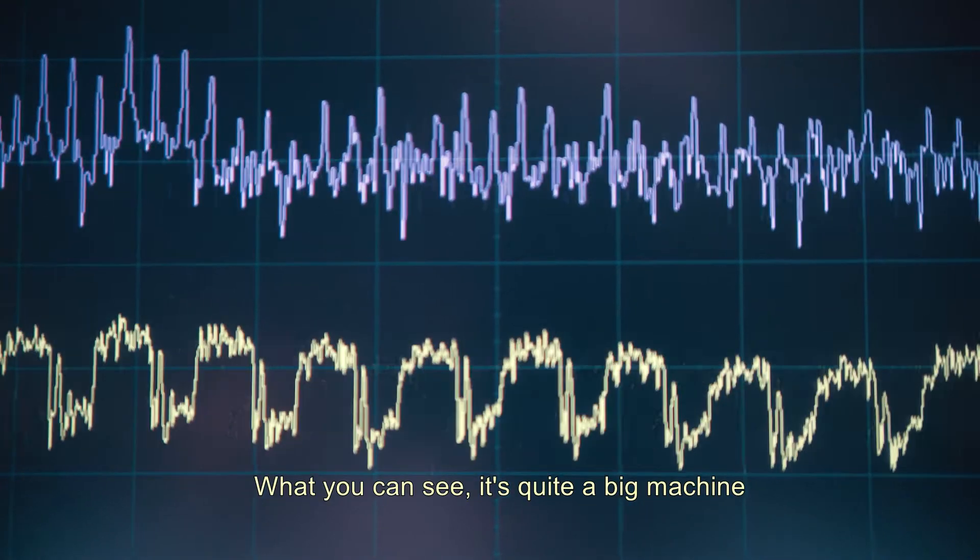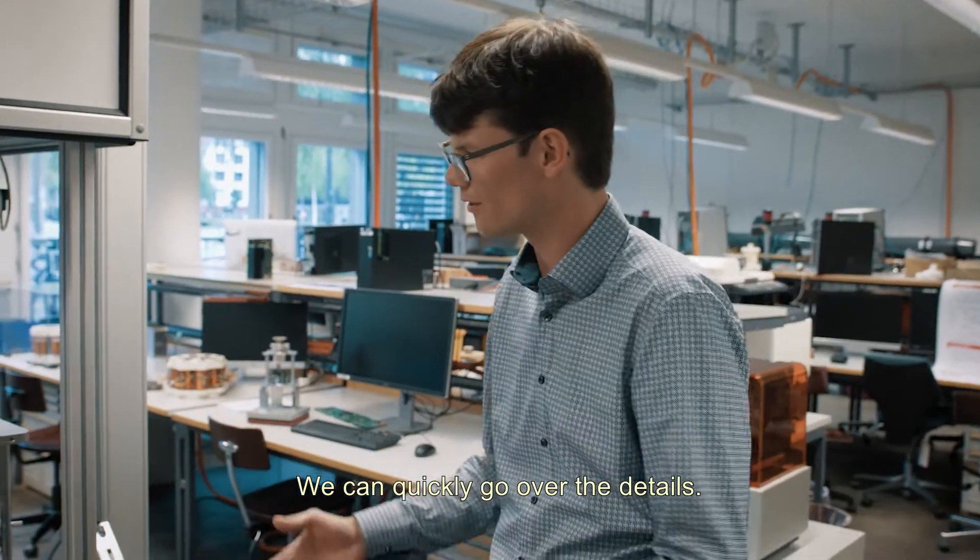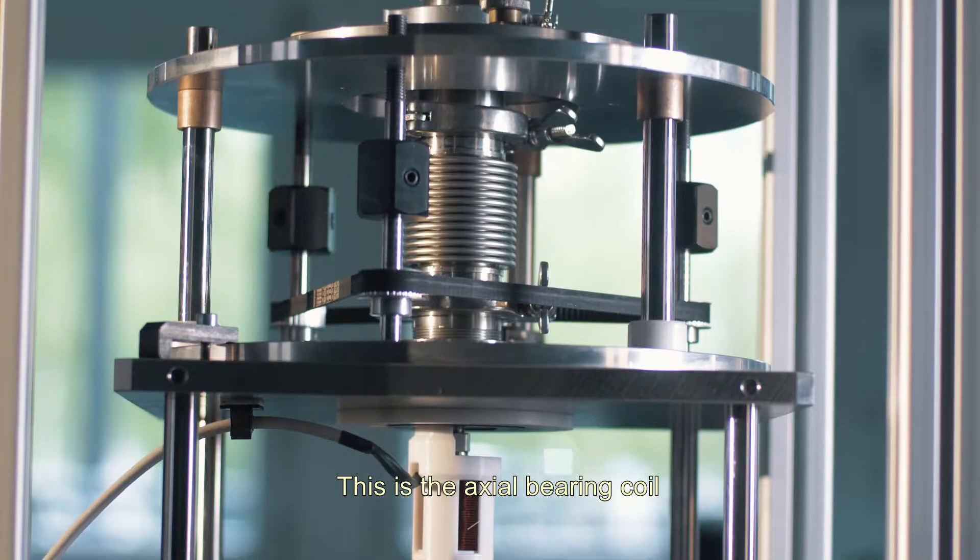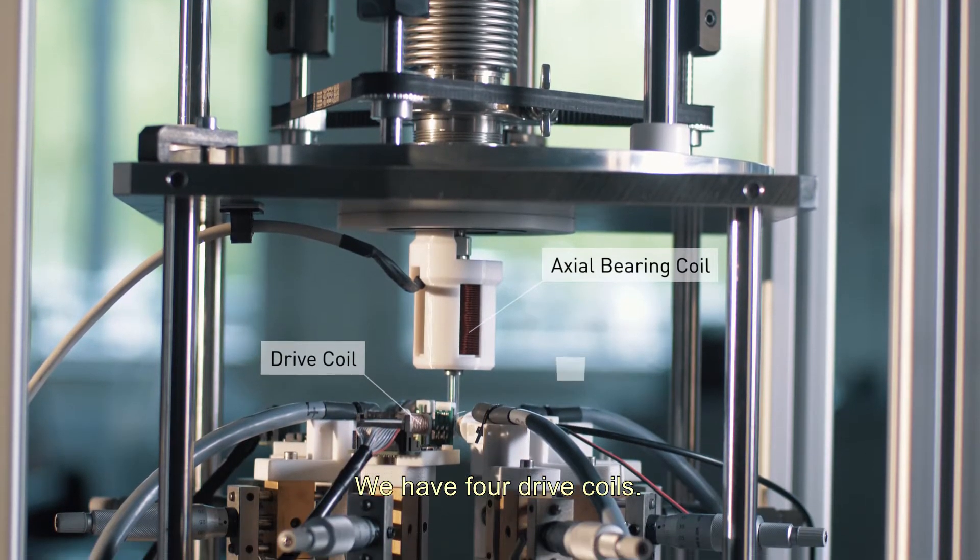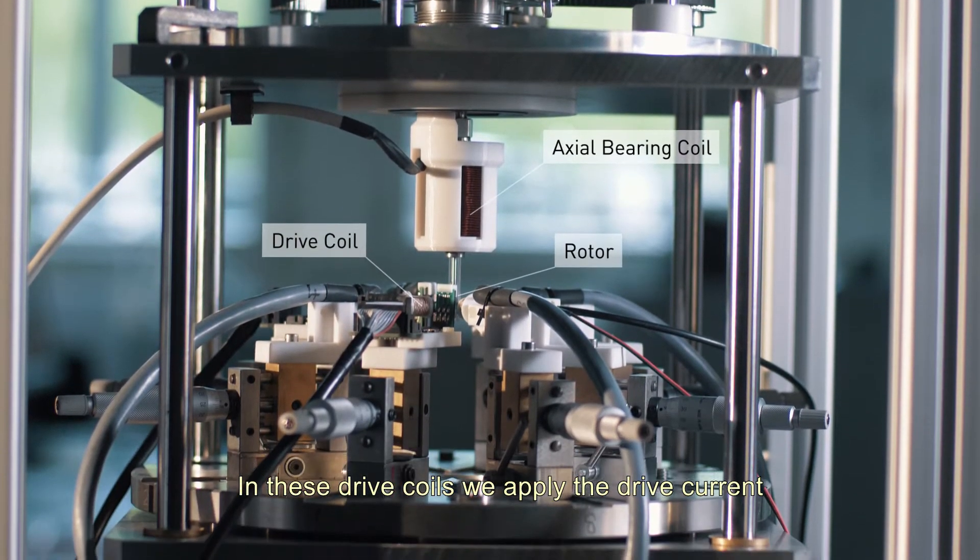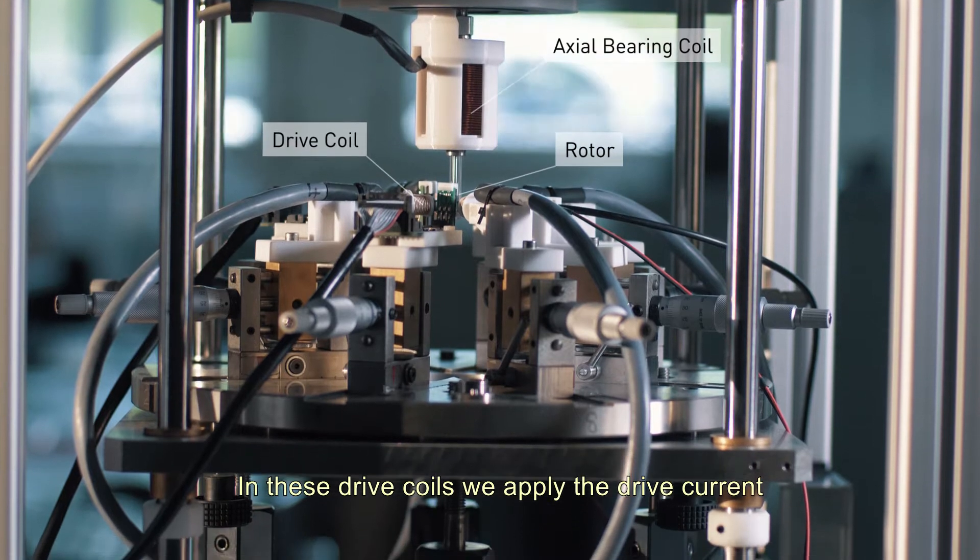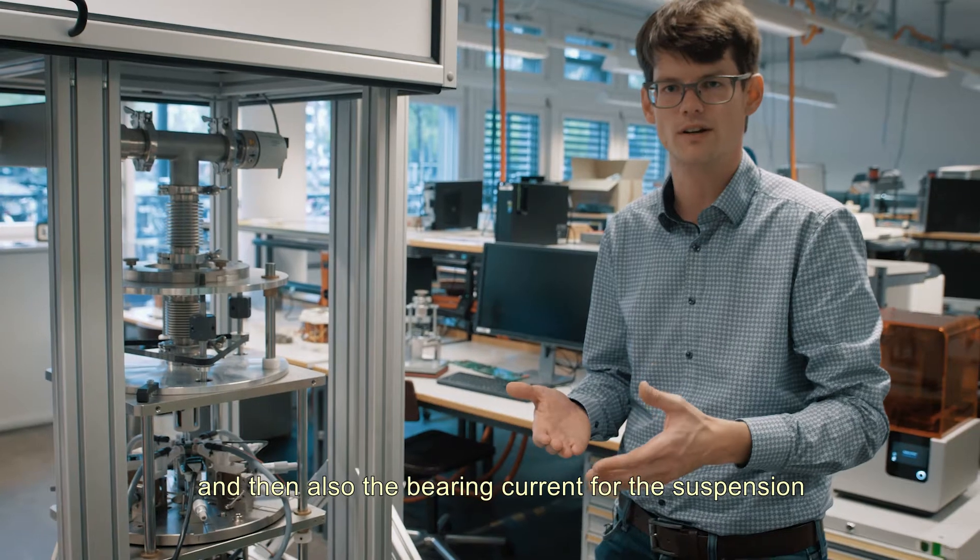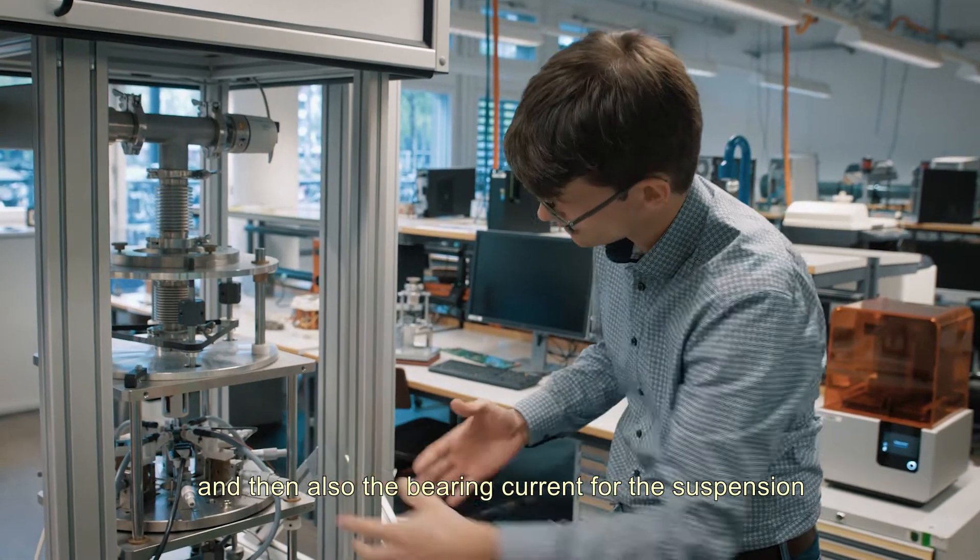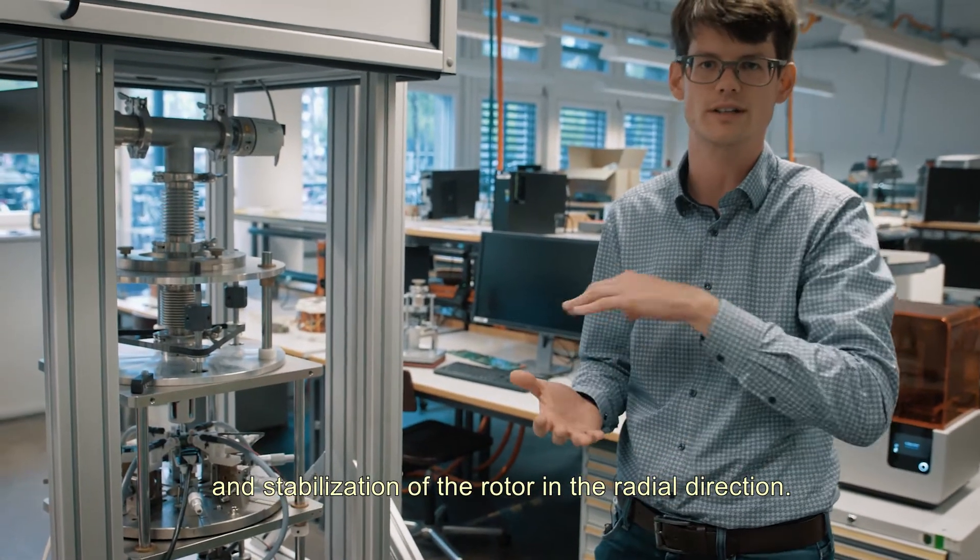What you can see, it's quite a big machine for such a small rotor, and we can quickly go over the details. This is the axial bearing coil that's used to levitate the rotor. We have four drive coils. In these drive coils we apply the drive current for the rotating magnetic field and then also the bearing current for the suspension and stabilization of the rotor in the radial direction.